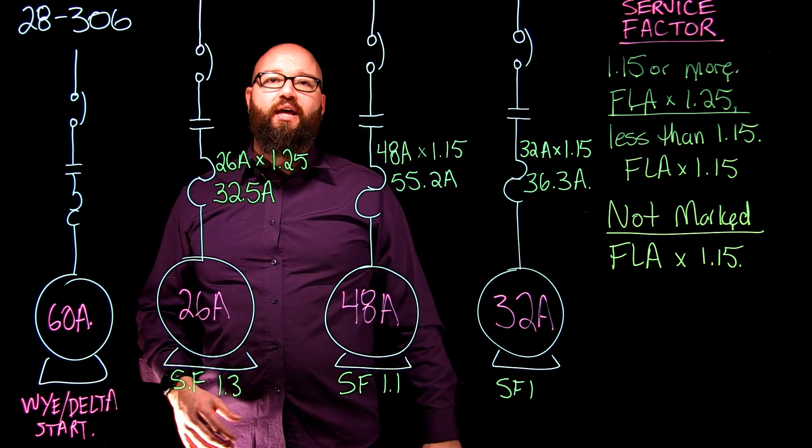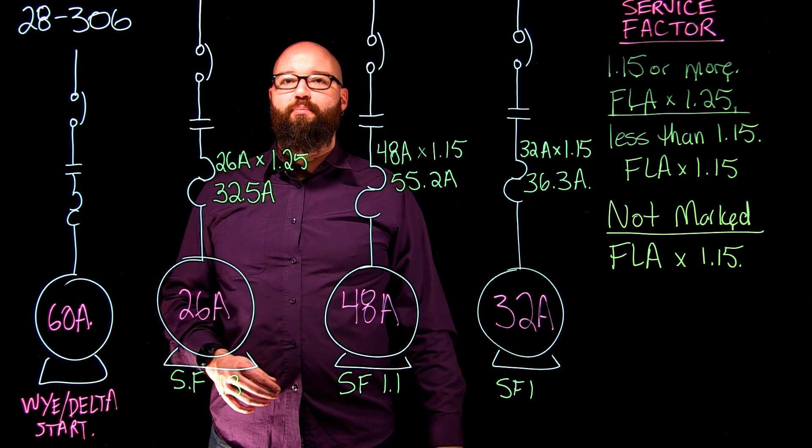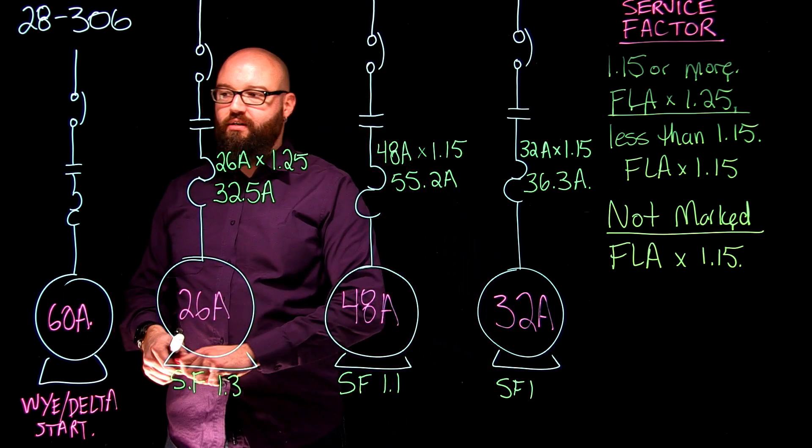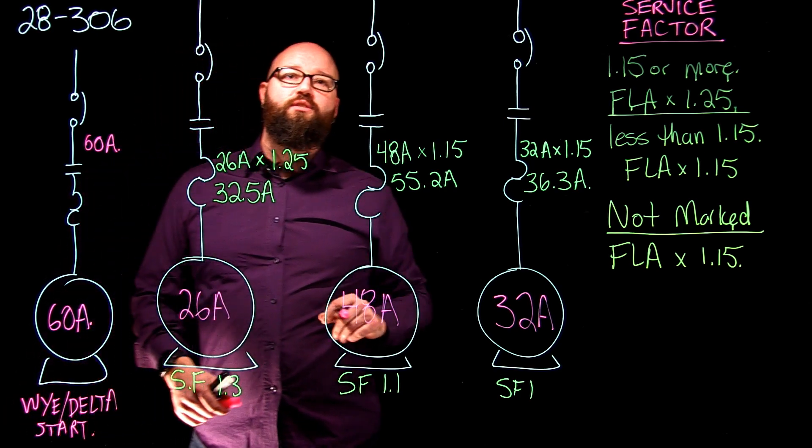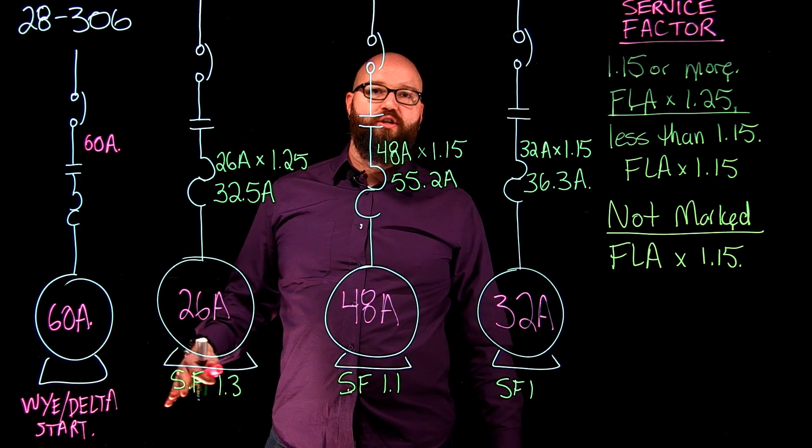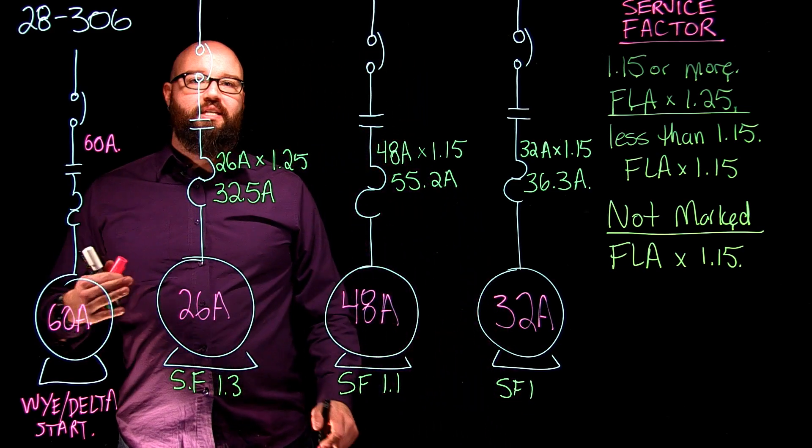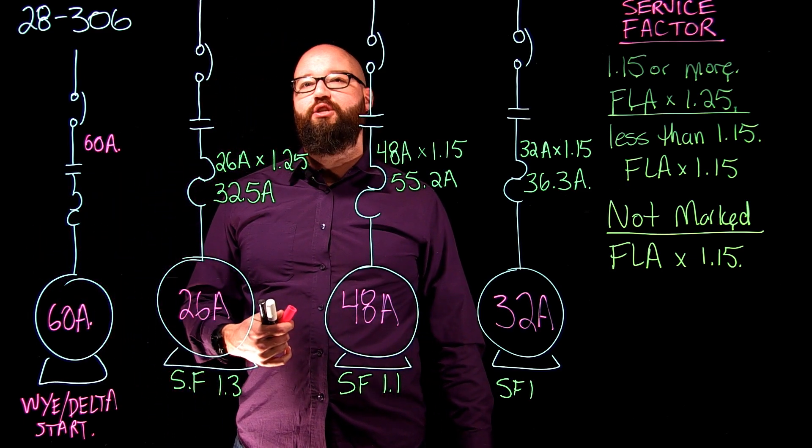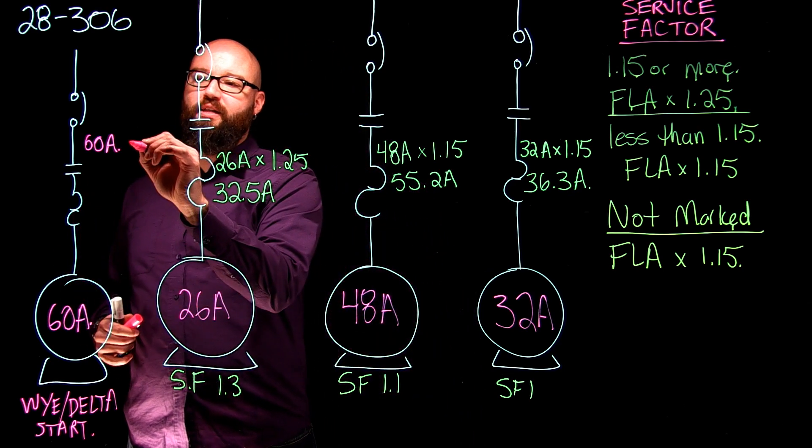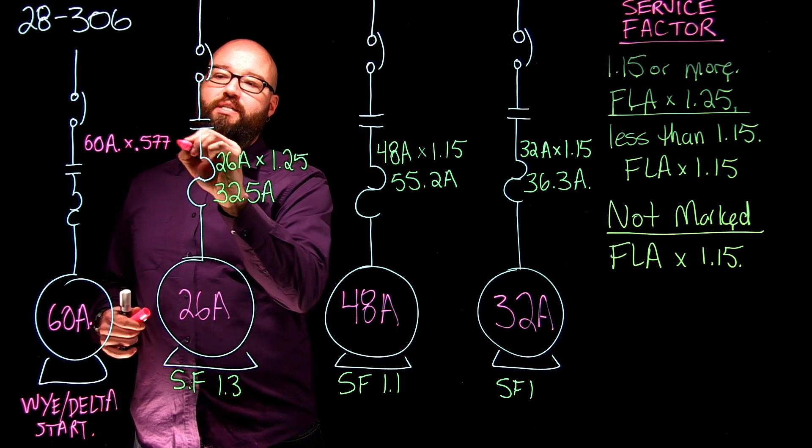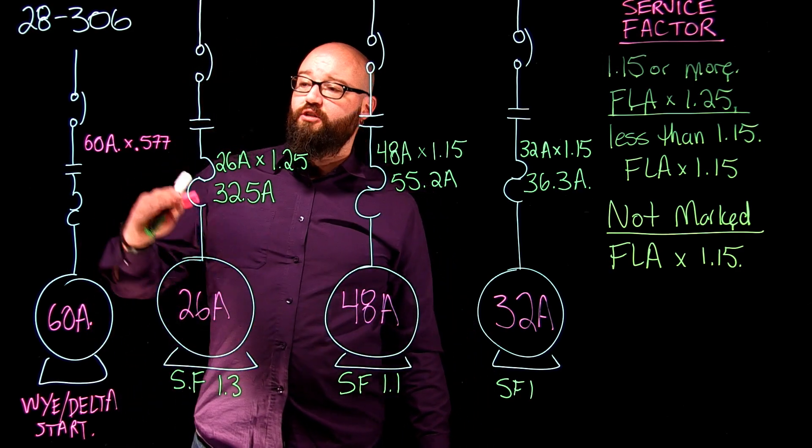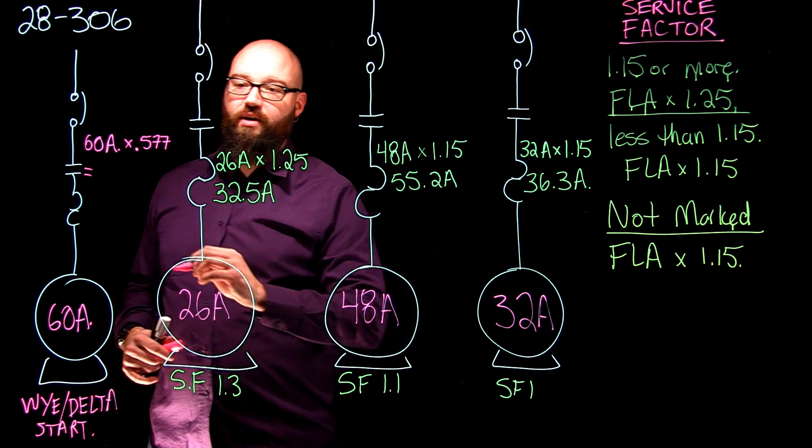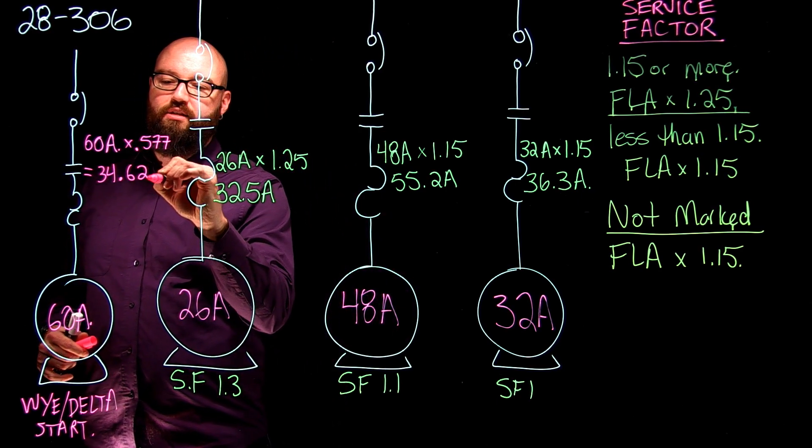When we're given a 60 amp FLA on a Y-delta motor, that 60 amps represents the line current of our delta connection. So we're going to take our 60 amps and what I need to do is find the phase current of my delta configuration because that's where my overloads are. To get that phase current from our delta line current, we know that there is a root 3 relationship there, and we also know that phase current is approximately 57.7% of line current. So we're going to take our 60 amps and multiply it by 0.577, and this is going to give us a delta phase current of 34.62 amps.